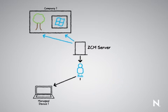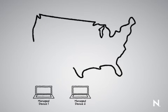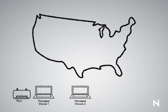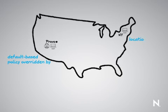When he goes over to managed device two, the same thing happens. Now, if you take the printer policy example, you may have a different printer on managed device one — printer one here — which is the default, because machine one may be in Provo. Machine two, when Bob goes there, may actually be in New York City, and so when he's in New York City, you don't want Bob to send all of his print jobs back to Provo.